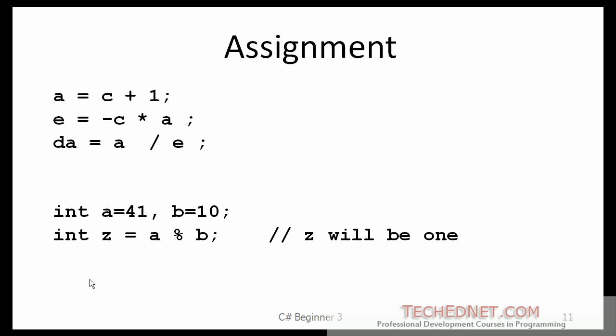This is how the assignment statements work. And again, these are pretty straight forward. On the first one, I am taking the current value of C, adding one to it, and I am assigning the result to A. On the next line, the result of this multiplication is assigned to a variable A. And here, the result of a division is assigned to a variable called DA.